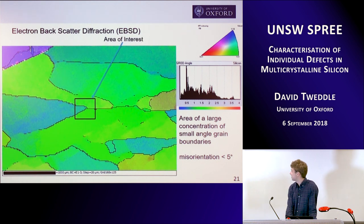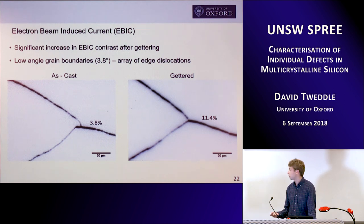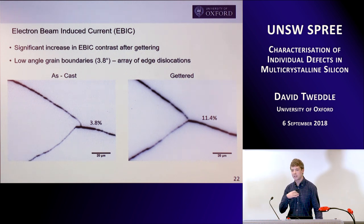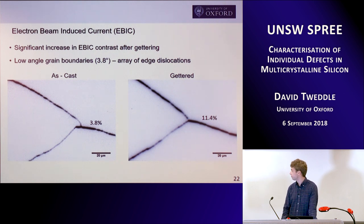I selected this area of interest for EBIC. What we can see is our as-cast sample before any processing has this grain boundary at around 3.8% contrast. And then after gettering, we're actually getting an increase in our contrast. This really suggests we're getting some sort of internal gettering effect after gettering, because we're getting the increase in EBIC contrast.